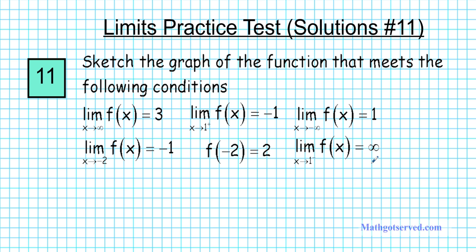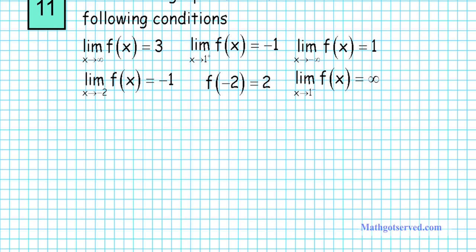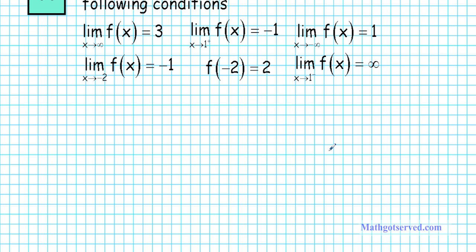So we are basically going to use this information to sketch a graph. There isn't any particular one unique right answer for this problem. There are different renditions, but at the points where x is approaching infinity or negative infinity, the different variations of the solution must look identical. So let's go ahead and sketch one of the possible solutions to this graph.